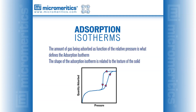The shape of the adsorption isotherm is the fingerprint of the texture of the solid. There are six types of adsorption isotherms relating to different textures of solids according to the Brunauer, Deming, Deming, and Teller classification.